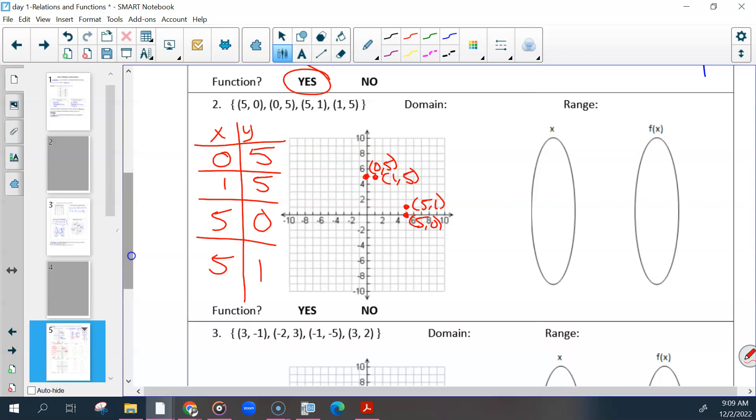How would we write our domain in curly brackets? 0, 1, 5. No repeats. And then our range: 0, 1, 5 again. So we have 0 going to 5, 1 going to 5, 5 going to 0, and 5 going to 1.